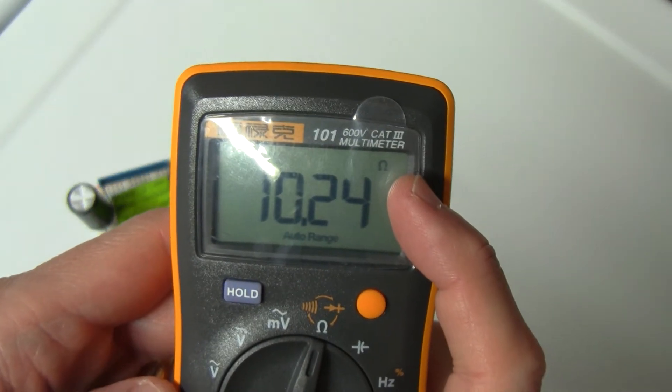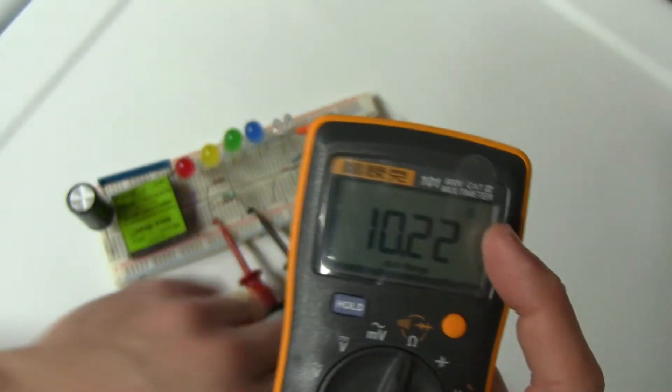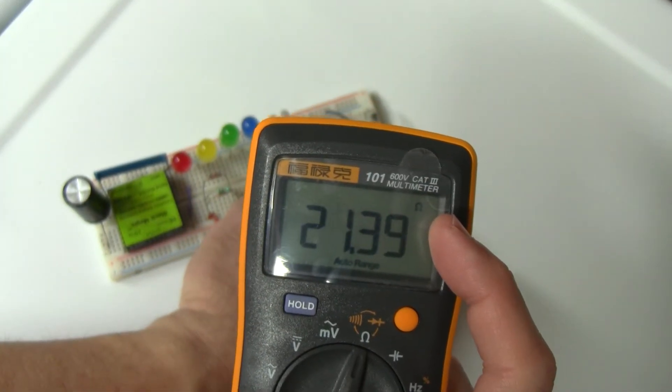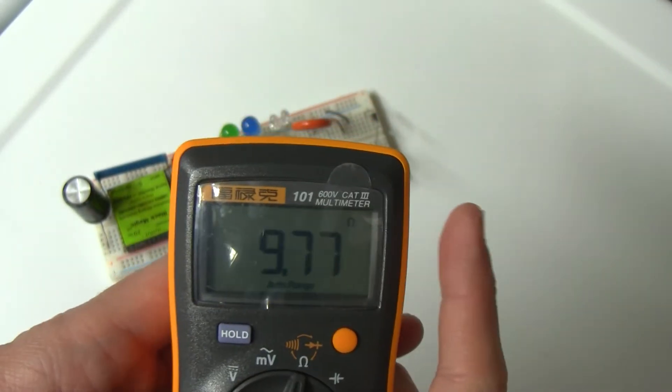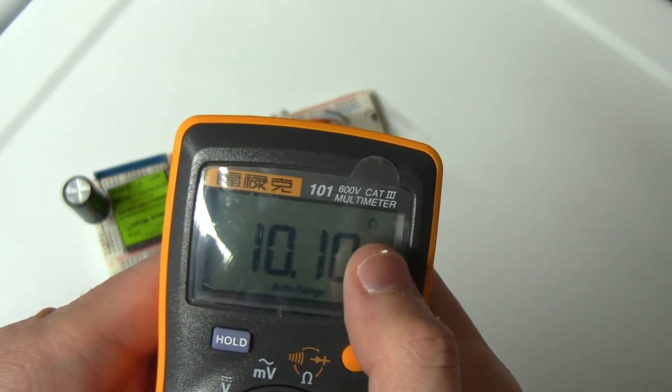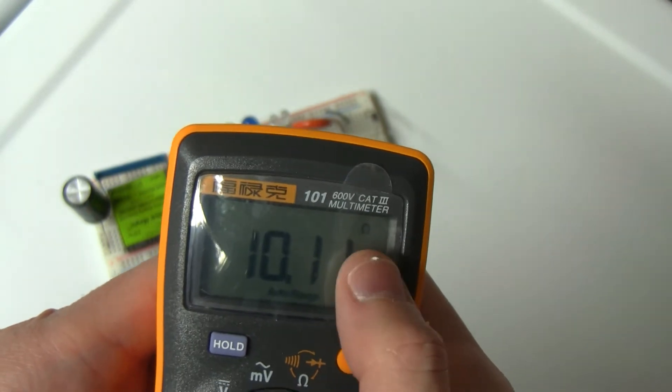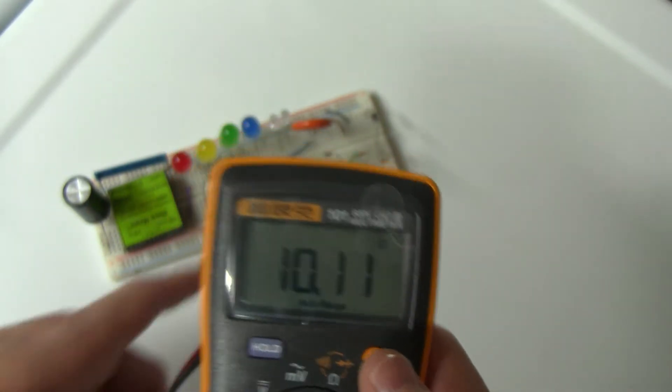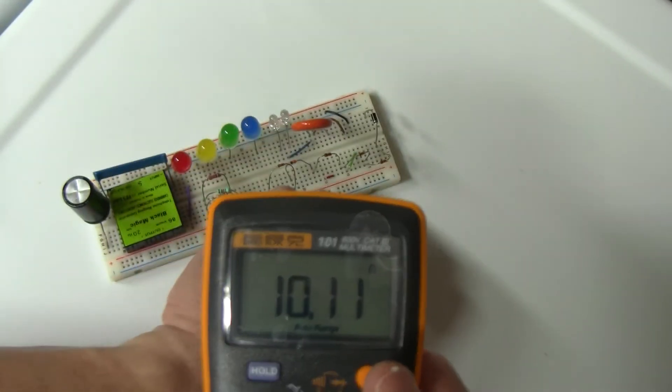So it says 10 ohms. And of course if I go to a 10k ohms, it says the same thing, saying 10 ohms, because the multiplier should be K instead of M but nothing shows up.